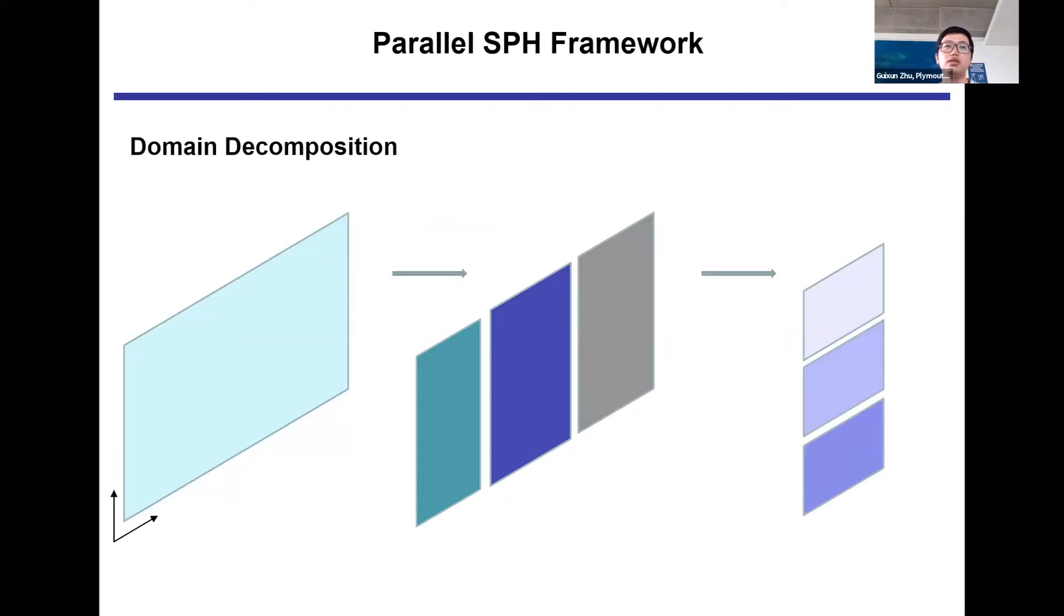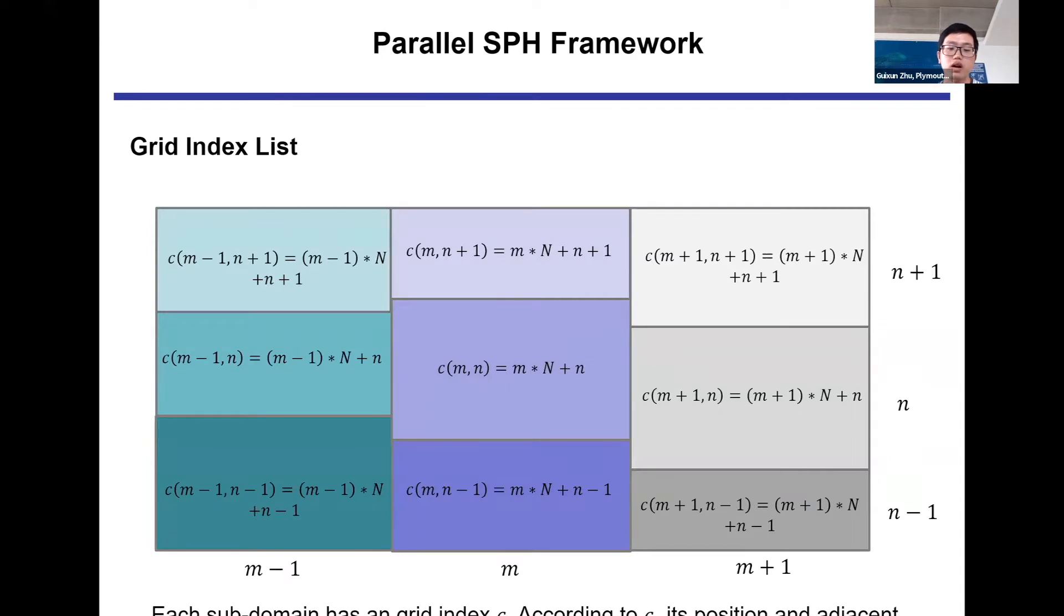For the domain decomposition, we set up the sub-domain boundary around the two directions of computational domain. The fluid particles, ghost particles, and interpolation nodes are placed into the corresponding processes. Meanwhile, sub-domains in the same column around one direction have the same sub-domain boundary through the whole calculation process. Each grid corresponds to one process. The index sorting method is used to sort the particles in memory according to the grid index.